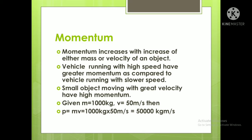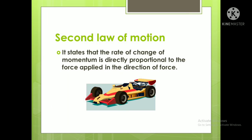A small object moving with great velocity can also have high momentum. For example, if mass is 1000 kg and velocity is 50 meters per second, then momentum will be 50,000 kg meter per second. This gives us the idea of momentum.